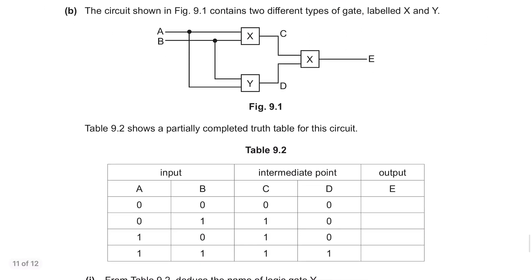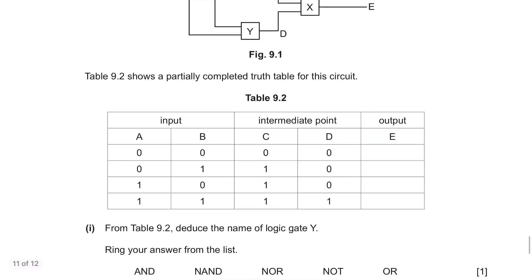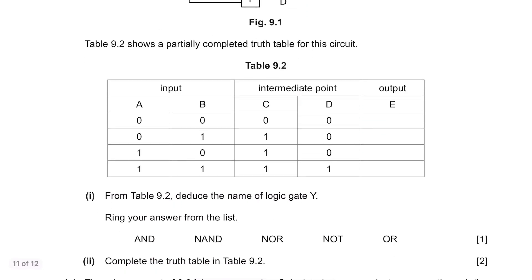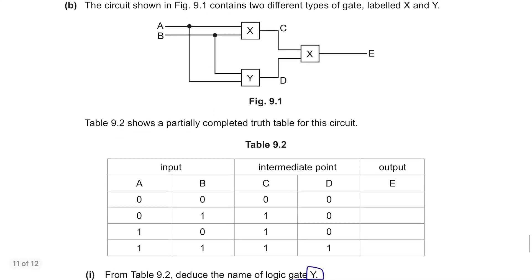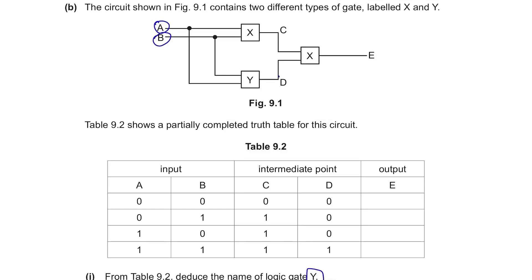Part B. The circuit shown in figure 9.1 contains two different types of gate, labeled X and Y. Table 9.2 shows a partially completed truth table for this circuit. From table 9.2 deduce the name of logic gate Y. Logic gate Y has inputs of A and B and produced an output D. So we can consider these two columns as inputs and this column as an output. 00 produced 0, 01 produced 0, 10 produced 0, and 11 produced 1. This is an AND gate.